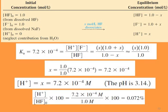The expression reduces to x = 7.2 × 10⁻⁴. From this we can find the pH using the standard pH equation. The percent dissociation equals [H⁺] divided by the initial concentration of HF, times 100: (7.2 × 10⁻⁴ / 1) × 100 = 0.072%.